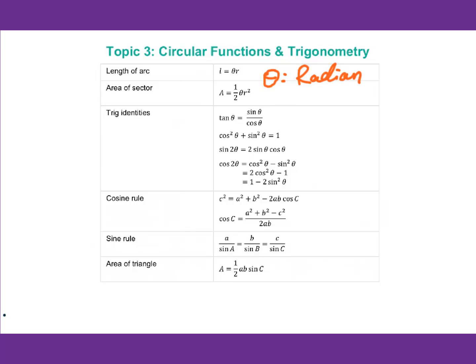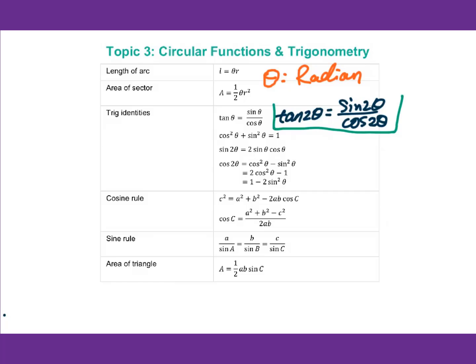For trig identities, tangent theta equals sine theta over cosine theta. Then tangent 2 theta equals sine 2 theta over cosine 2 theta. For the exam, we need to use this a lot.